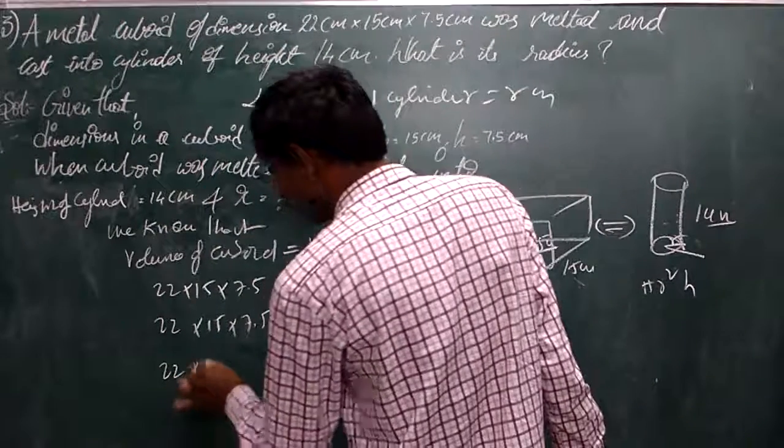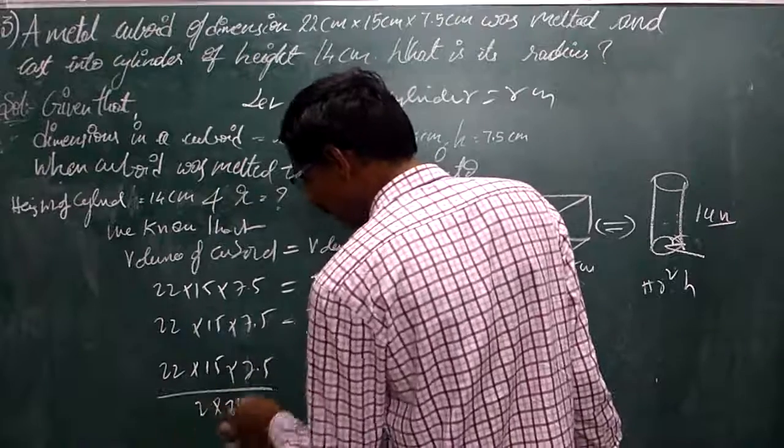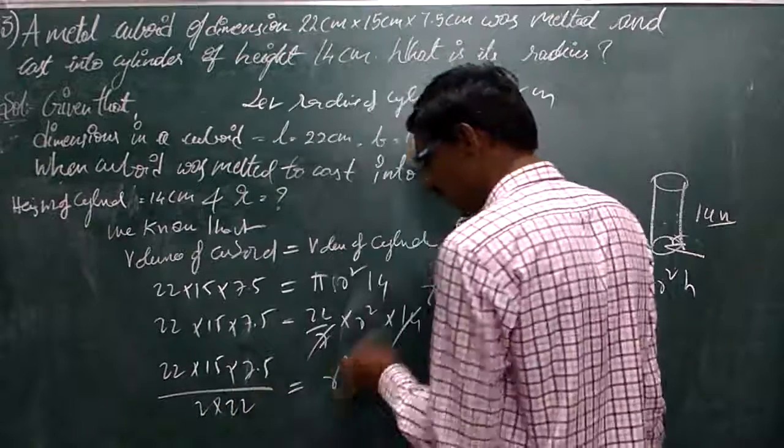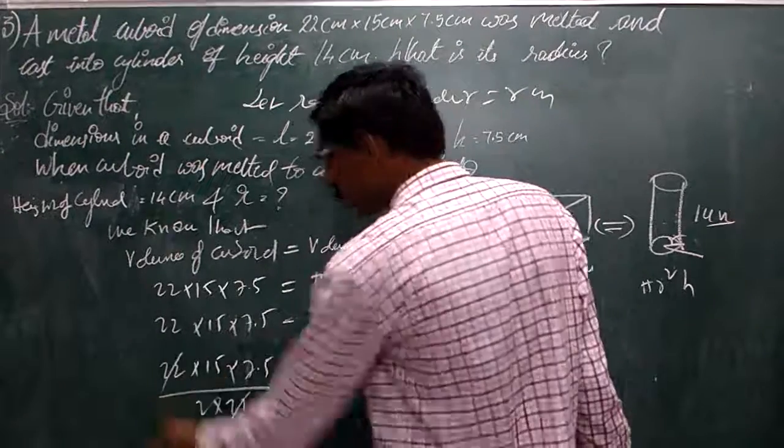So 22 into 15 into 7.5 divided by 2 into 22 by 7 into 11 equals R squared. 22 is here, R squared.